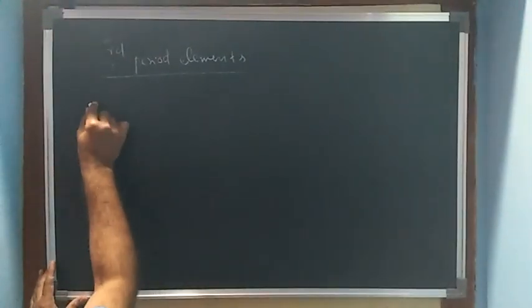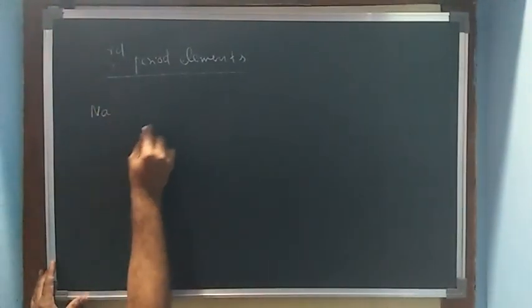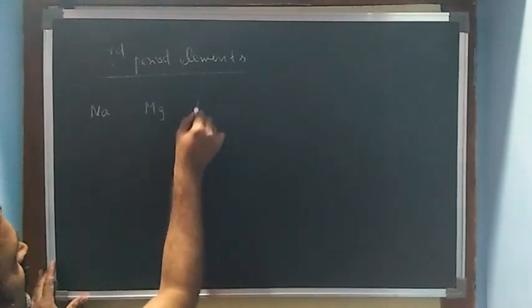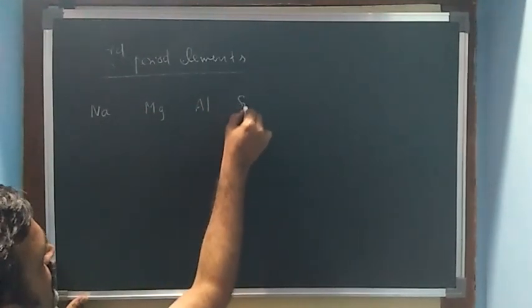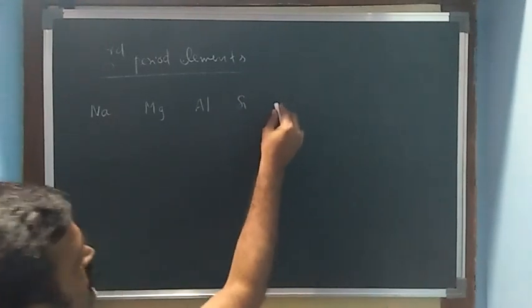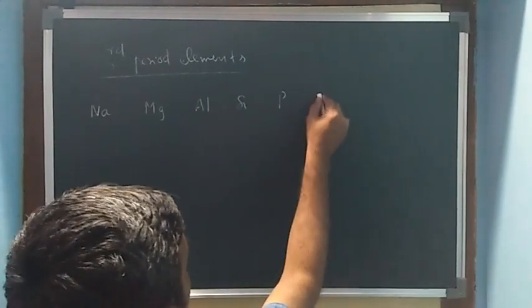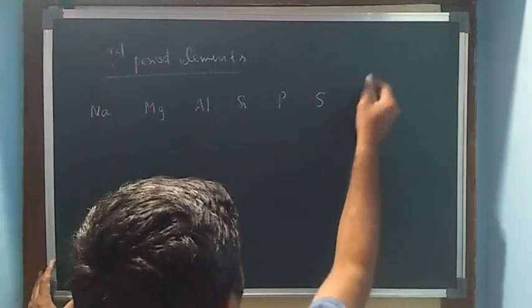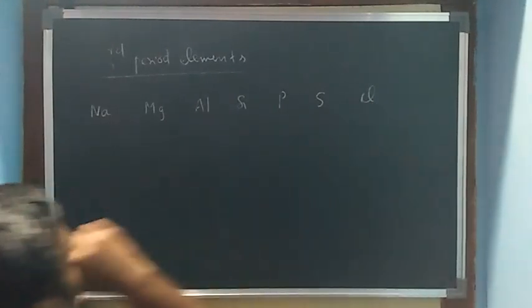So I am going to write third period elements. What are exactly third period elements? We start with the sodium metal—sodium, magnesium, aluminum, silicon, phosphorus, sulfur, chlorine. You can observe these elements in the period in that period of the periodic table.